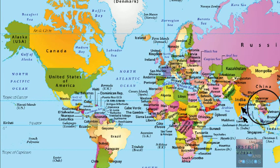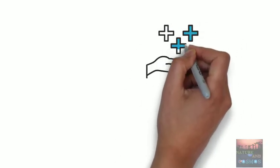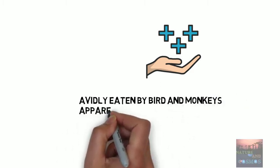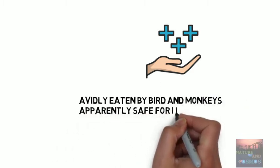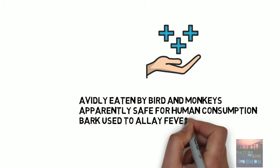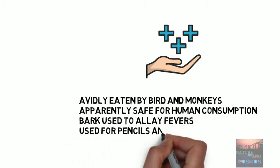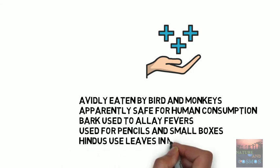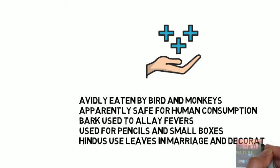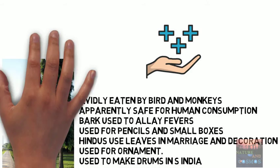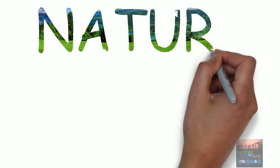The ripening fruit is eagerly eaten by flying foxes, birds, and monkeys. Apparently it is safe for human consumption. The bark is used medicinally to treat fevers. The startlingly white, even-grained wood is hollowed out to make drums in south India and is also used for making pencils and small boxes. Hindus often employ the leaves in marriage ceremonies and to decorate gateways, though the origins of this sanctified use are obscure. It is widely cultivated throughout India for ornament.